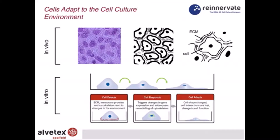Let's talk first about 2D and 3D cell culture and what we're trying to achieve with this technology. In vivo, cells grow in three dimensions and they do so in close proximity to their neighboring cells and also the extracellular matrix, the ECM. The schematic diagrams on the top line depict how a cell grows closely with its neighbors.